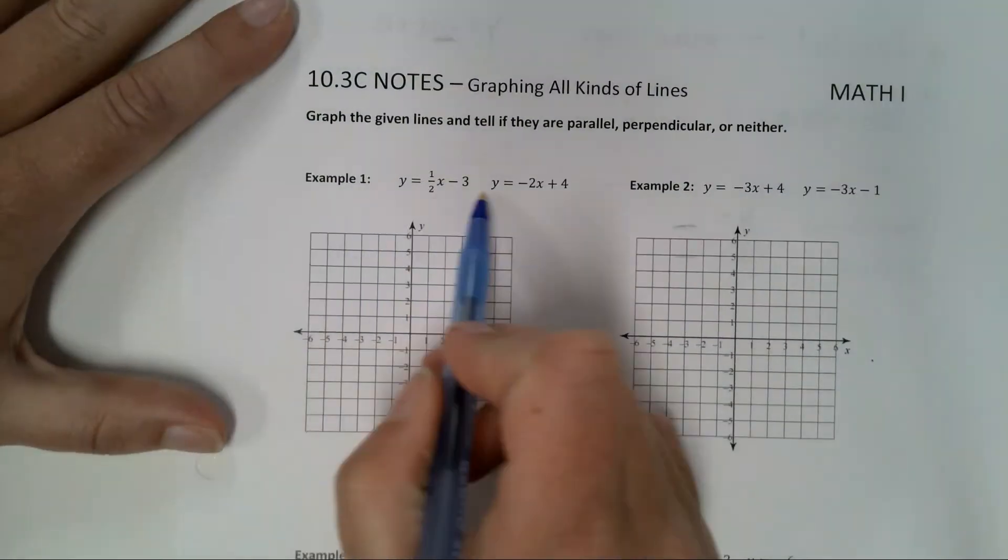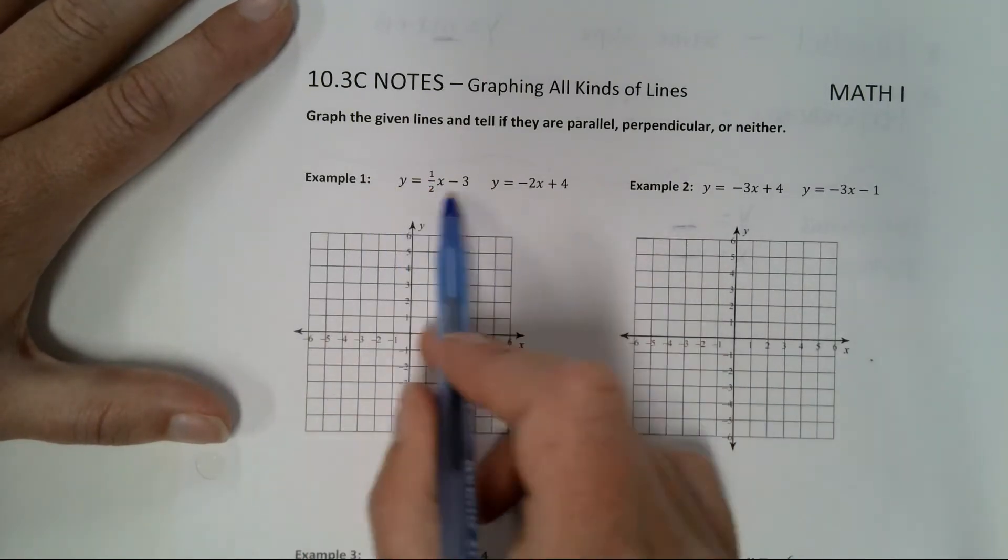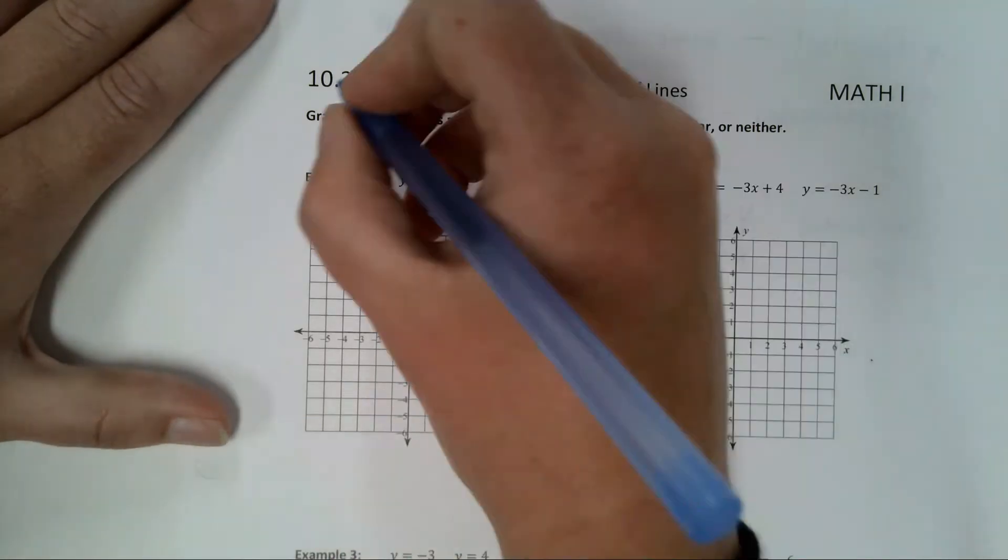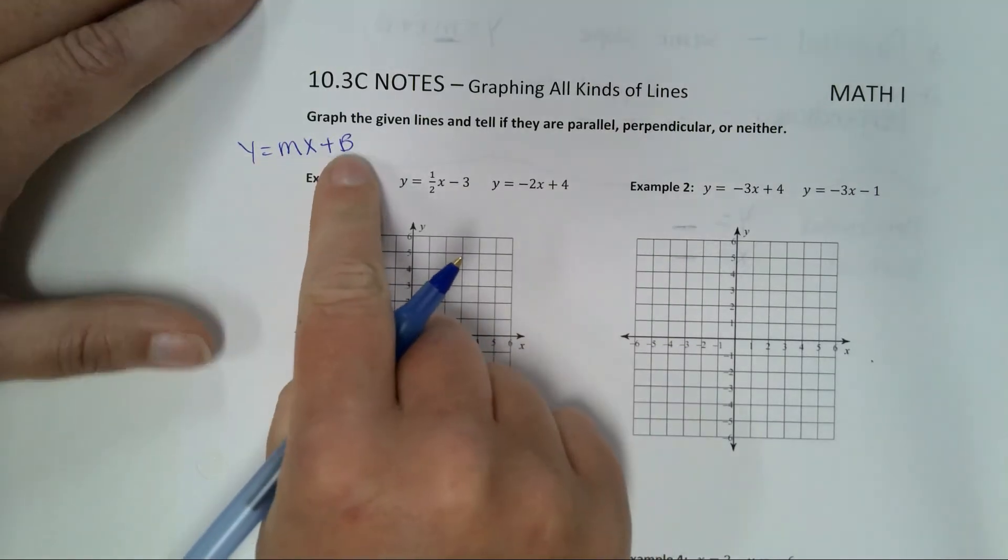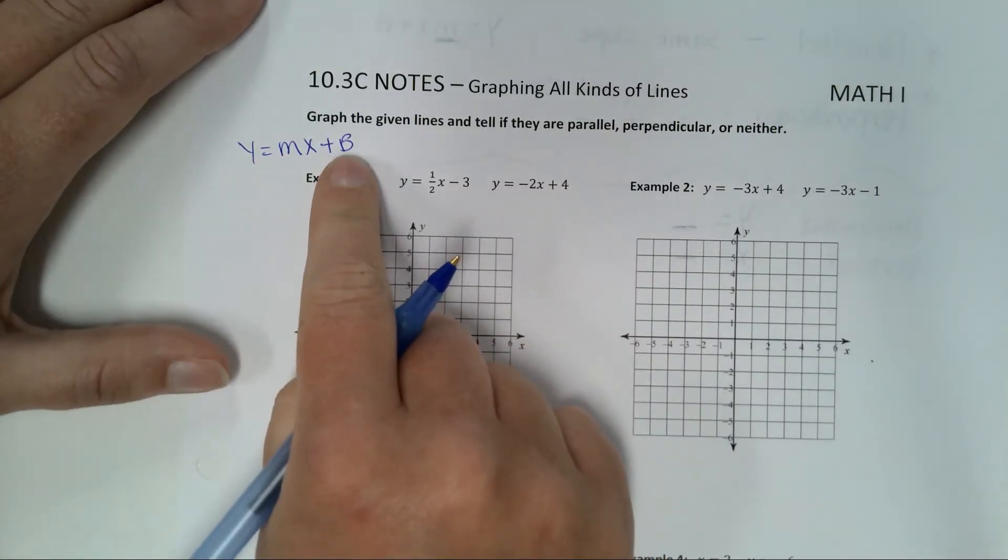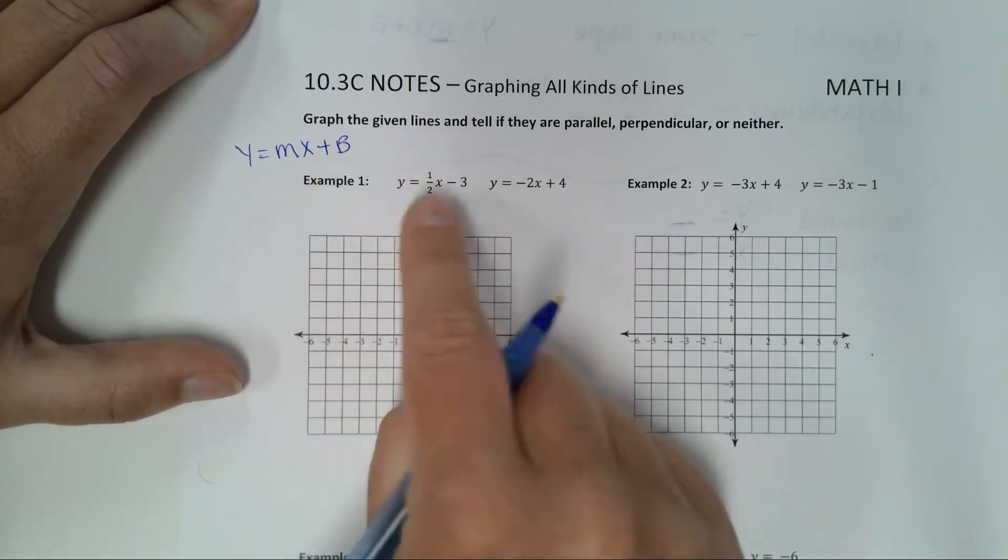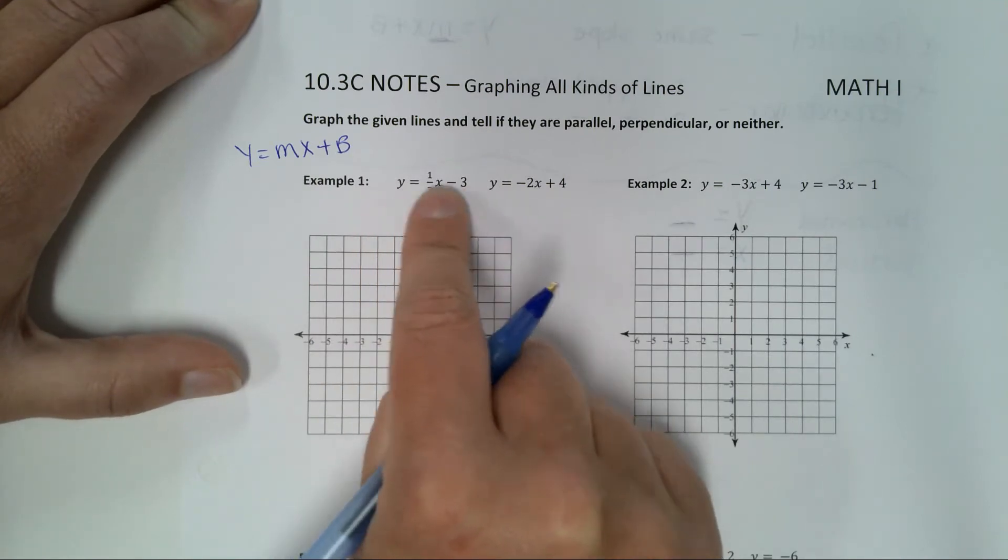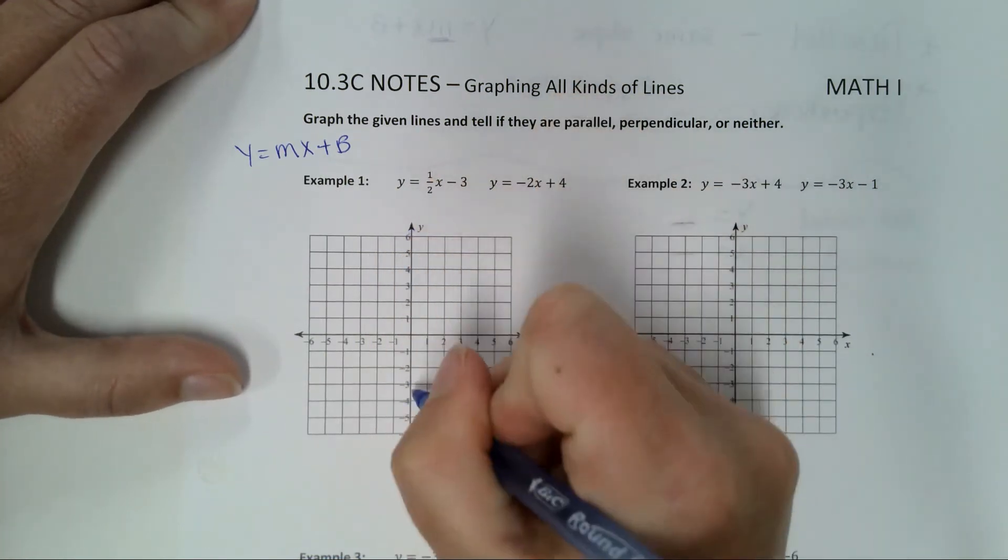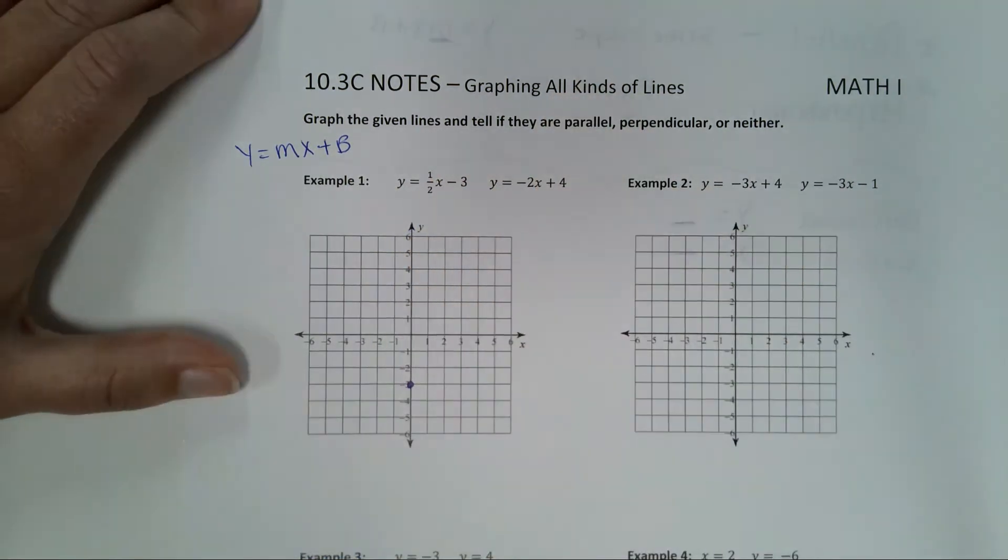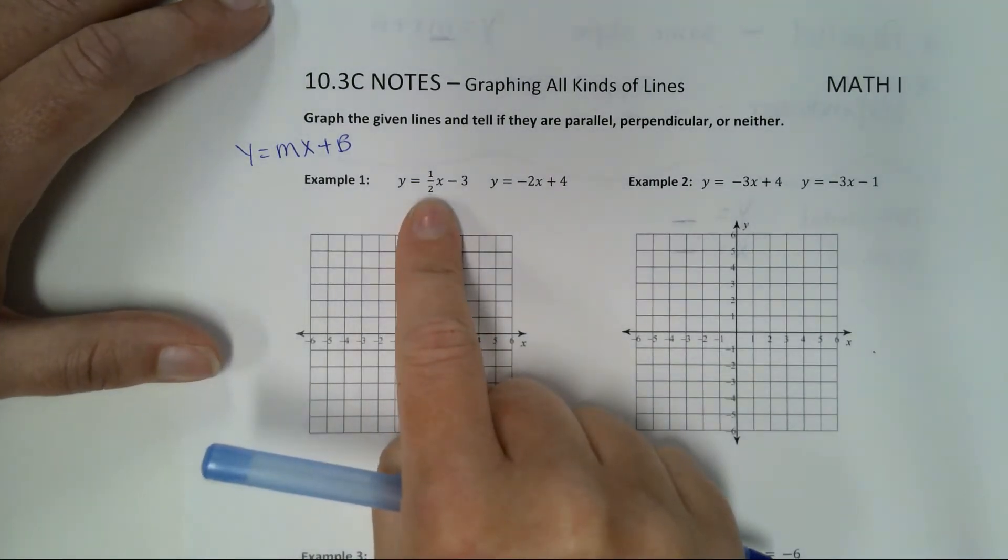This first example here, are these horizontal or vertical lines? No. These are in the form y equals mx plus b. So this is like what we were doing last week and the week before. When you're graphing a line that looks like this, we start with our y-intercept. Looking at this line, what's my y-intercept? Negative 3. So we start at on the y-axis at negative 3. And you put a point. And then our slope, which is what? One half.